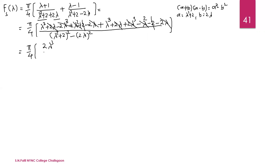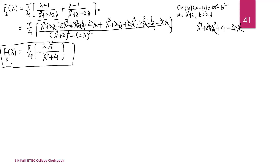After cancellation, F_s(λ) = (π/4) · 2λ³/(λ⁴+4). Simplifying, the 2 and π/4 give π/2, so F_s(λ) = (π/2) · λ³/(λ⁴+4). This is the Fourier sine transform result. Now for the integral representation, we use the inverse Fourier sine transform.